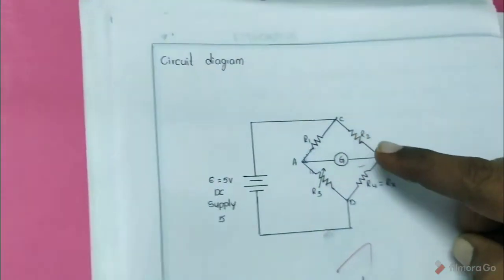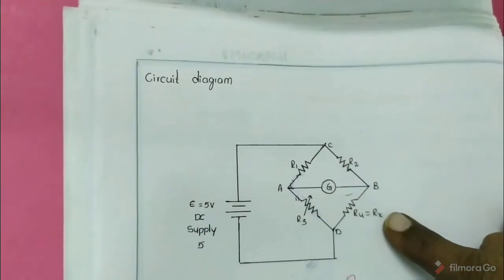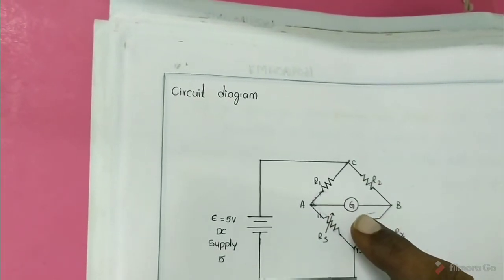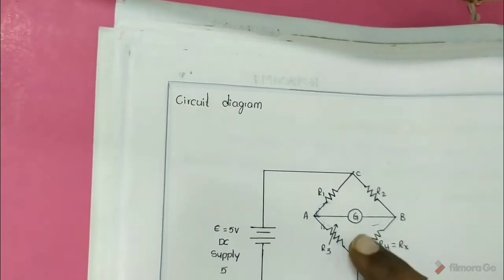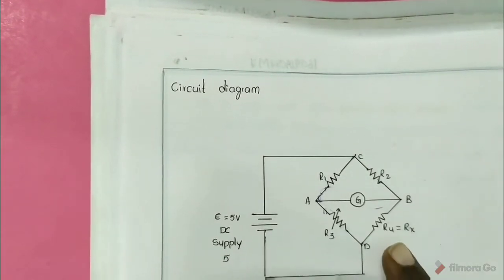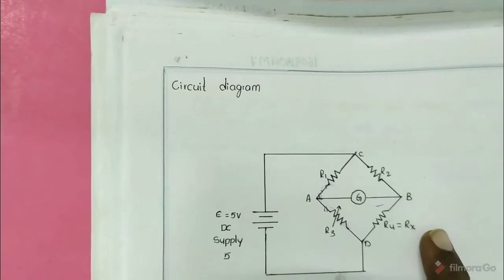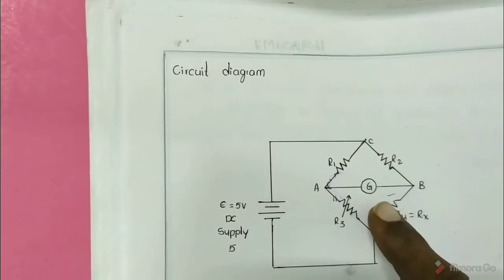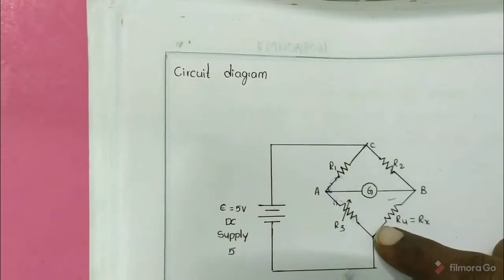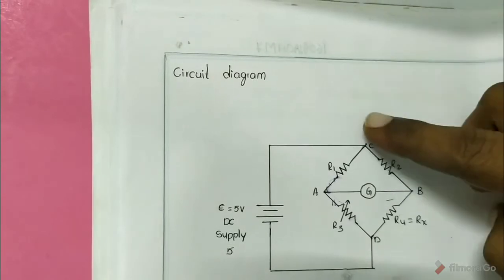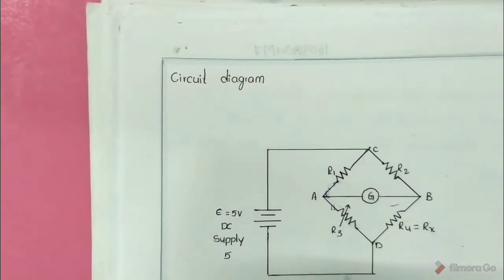First, see the circuit diagram. Take four resistors R1, R2, R3, and R4. You can take any values, but preferably R1 = 10kΩ and R2 = 10kΩ. For R3, use a DRB (decade resistance box), which is a variable resistor. R4 is assumed as the unknown resistance, so R4 = Rx. Across two terminals connect a galvanometer, and between the other two points apply a DC power supply — preferably 5 volts.